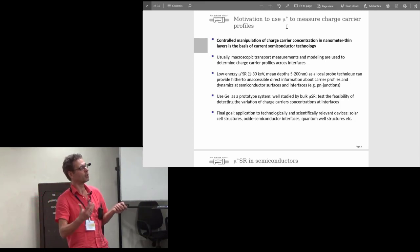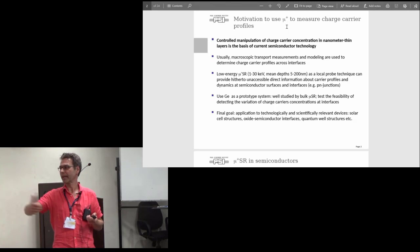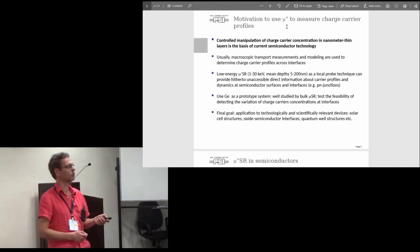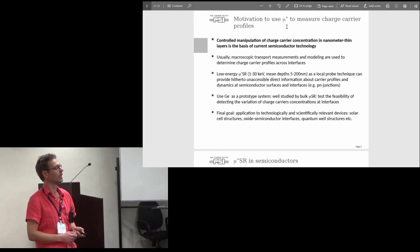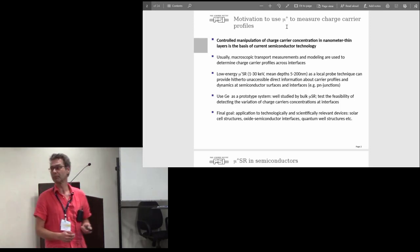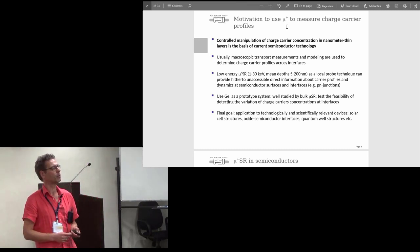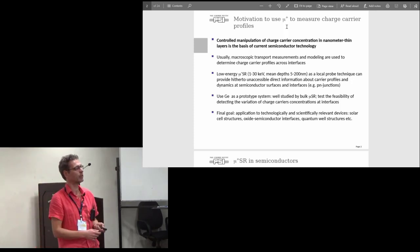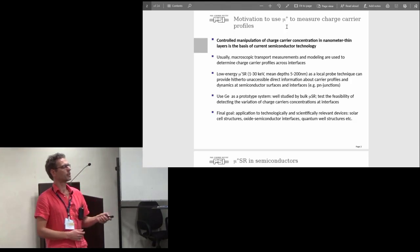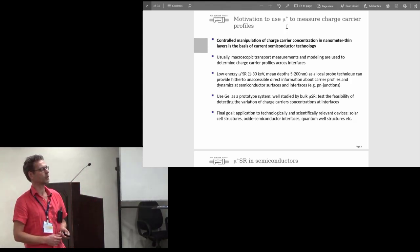With low energy muons, if they are sensitive to carrier concentration, you can just scan your beam through the regions where you expect a change of charge carrier concentrations, for example at PN junctions. Here we use germanium as a prototype system because the muon signal is very well understood. As a final goal, one would try to apply this then also to some more technically and scientifically relevant devices like solar cell structures, oxide semiconductor interfaces, quantum well structures and so on.